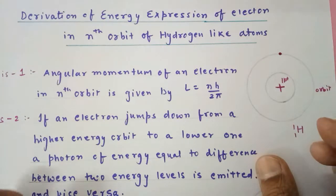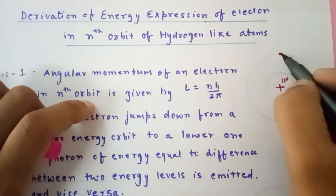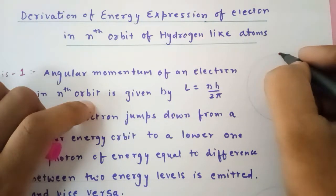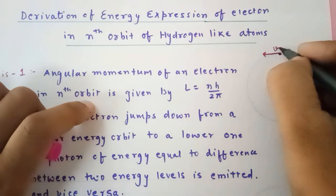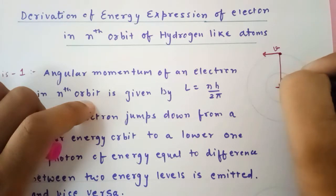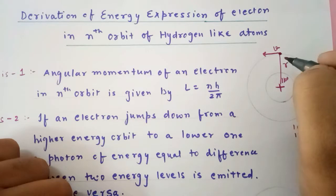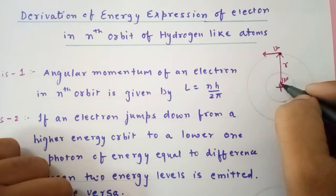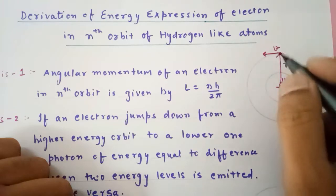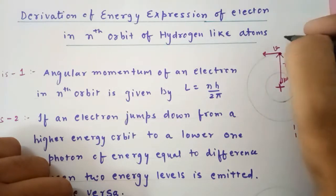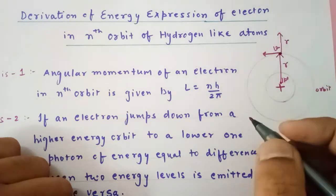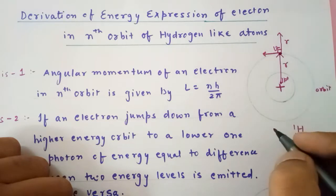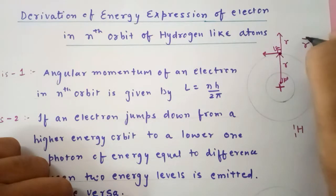This electron keeps moving round and round in a circular path. If we consider the path of the electron to be anticlockwise, then at this point the direction of velocity is tangential, and this would be the radius r. The radius vector r always points towards the electron and starts from the nucleus. We find that the angle between r and v is 90 degrees — r vector is perpendicular to the velocity vector.